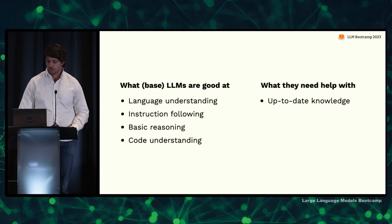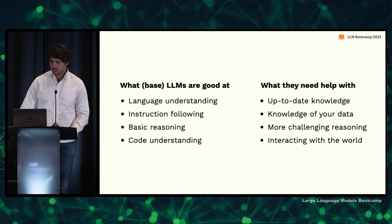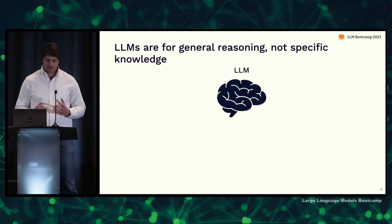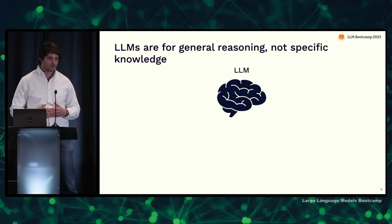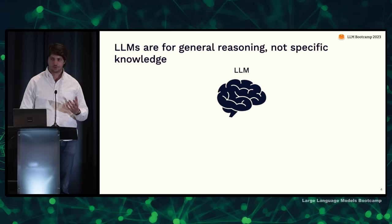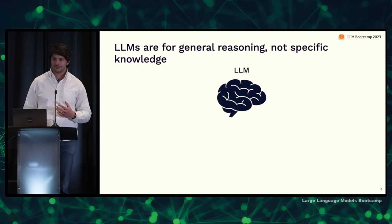There's a lot of things they also need help with. They don't have up-to-date knowledge of the world, they don't know anything about your specific data, they don't do very well with more challenging reasoning — especially anything that looks like math — and they have no way of interacting with the world on their own. The mental model we should have is that language models are engines for general reasoning; they're not designed to have specific knowledge. OpenAI has been training larger and larger models but still doesn't train on data past 2021. So we can think of the language model as the brain, and we have to give it tools and data so it can actually do the tasks we want.